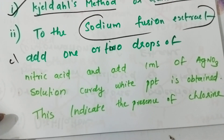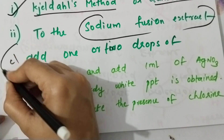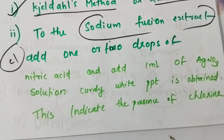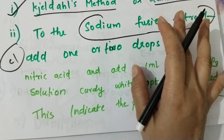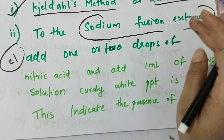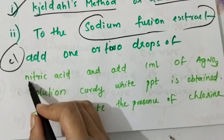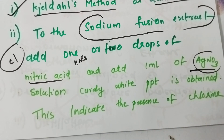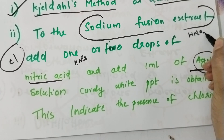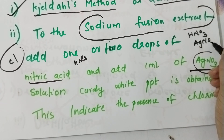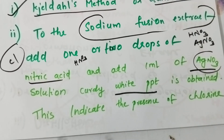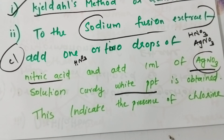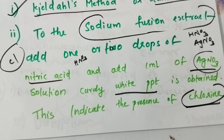We will learn how to detect the presence of chlorine in an organic compound. We can add dilute nitric acid (HNO3) and then add AgNO3 solution. A white residue is formed, which confirms the presence of chlorine.